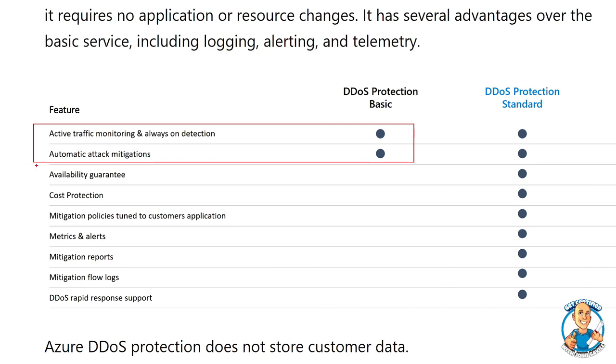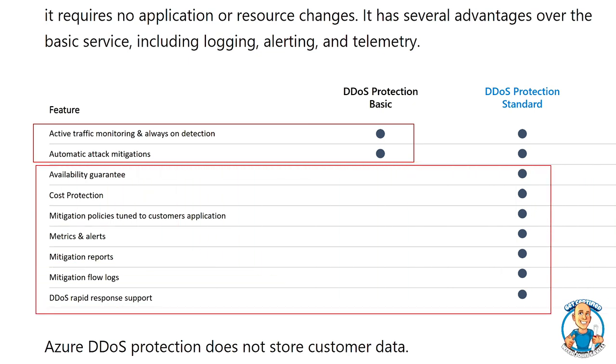But if I add standard, so I create the plan and link it to the virtual network that has the resource that links to the public IP, then I get those availability guarantees, the cost protection. So I get those credits, mitigation policies tuned to the customer's application. So it learns what's normal.